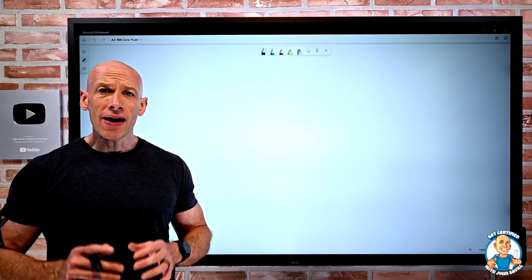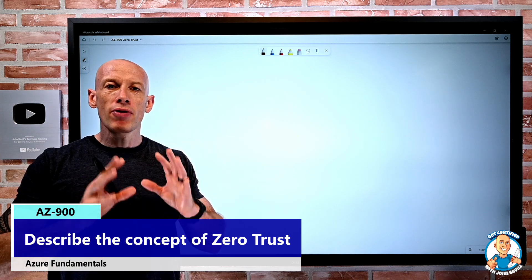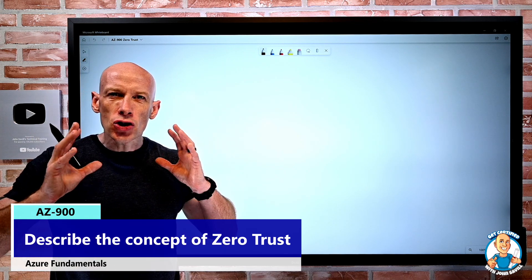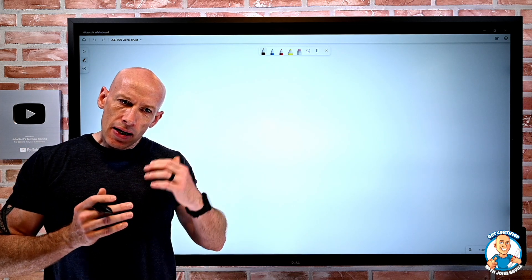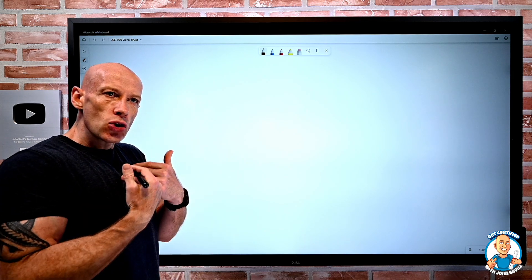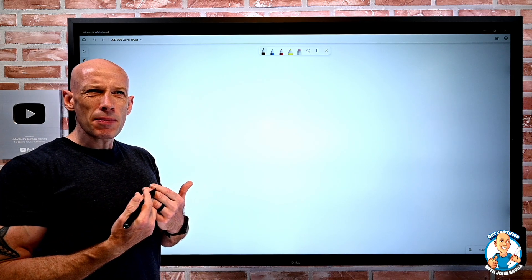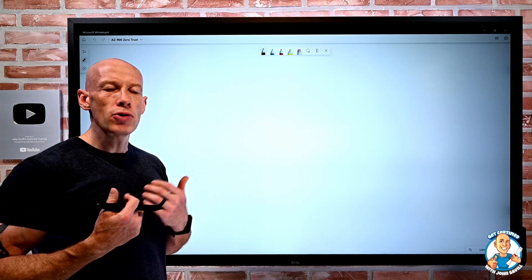In this lesson, I want to talk about zero trust, a huge critical principle when we think about the security of any service we have today. We already talked about the idea of defense in depth. This takes it to another layer, and we think about just because something's on a certain network, we don't trust it.